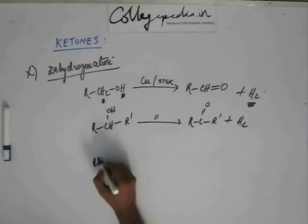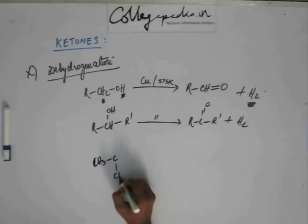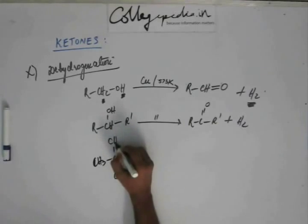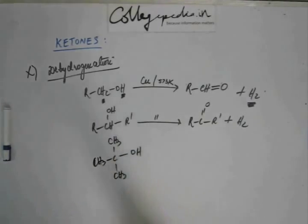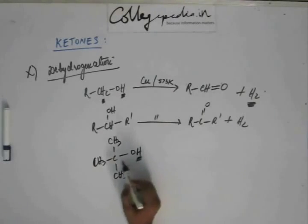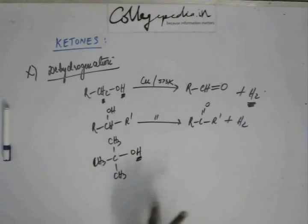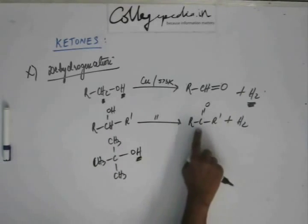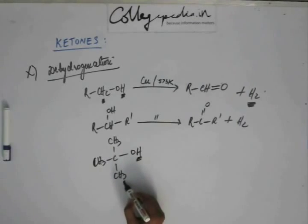If you take a 3° alcohol, suppose I am taking tertiary butanol. Now in this case, there is no hydrogen on the carbon—there is a hydrogen on oxygen, but there is no hydrogen on this carbon to be removed and C double bond O to be formed. So in that case, a hydrogen from this carbon is removed.